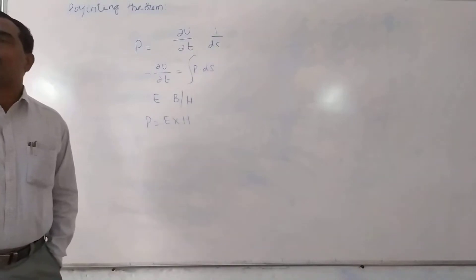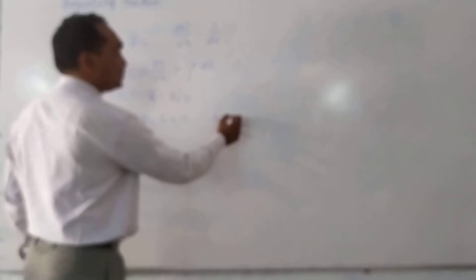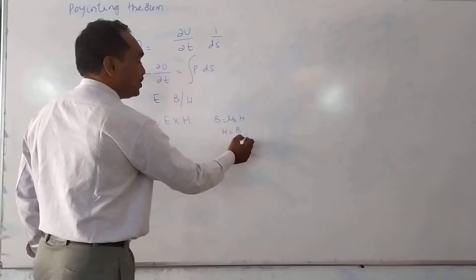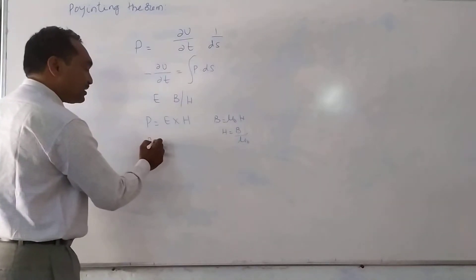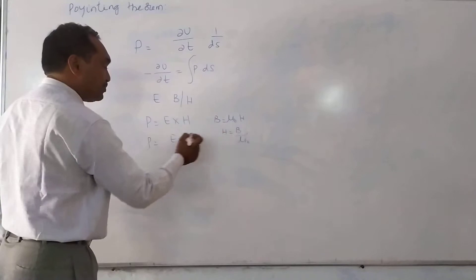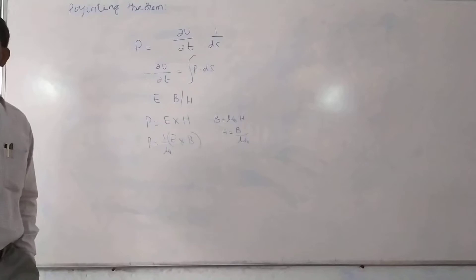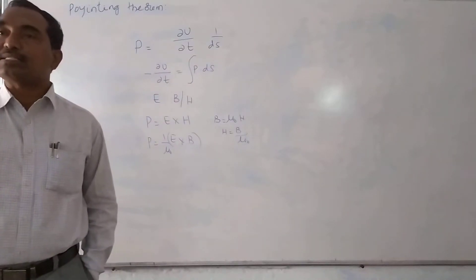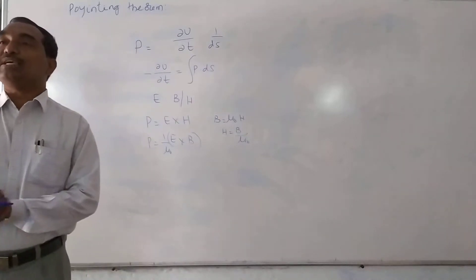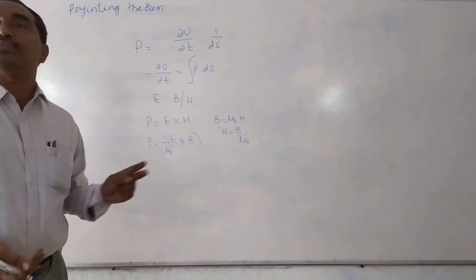That is our final result. We know P is equal to E cross H, and H is equal to B/μ₀. From this, the Poynting vector P is equal to (1/μ₀)(E cross B). Now we will derive this Poynting vector using this concept.